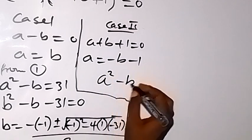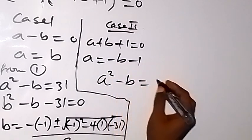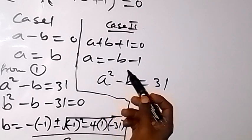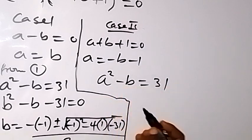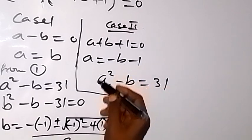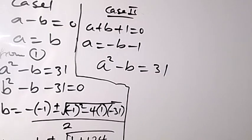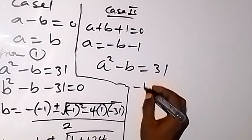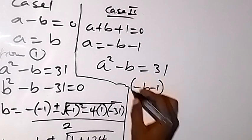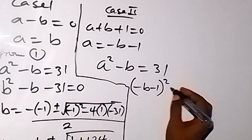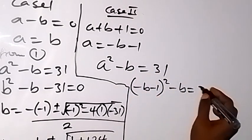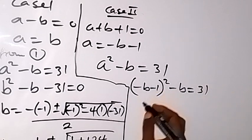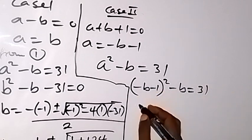From equation 1, a² minus b equals 31. In case 2, a equals minus b minus 1, so we substitute: (−b − 1)² minus b equals 31.